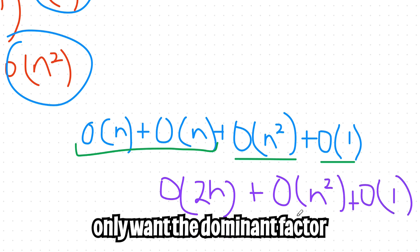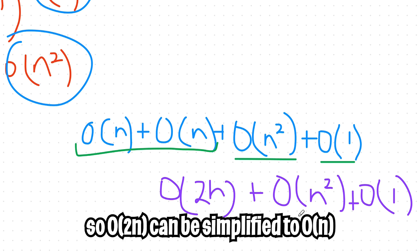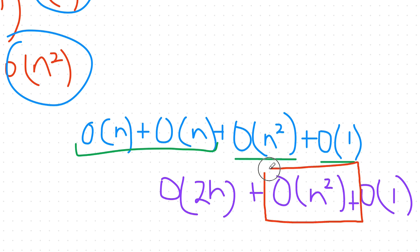So when we talk about runtime, we care more about the dominant factor, which is basically the slowest thing in the equation. So in this case, O of N squared is the slowest one. So the runtime of this program is just O of N squared.